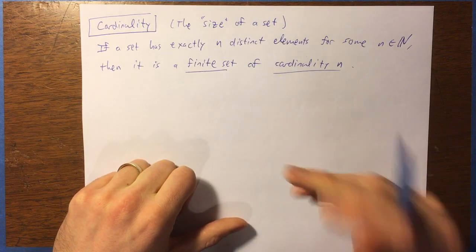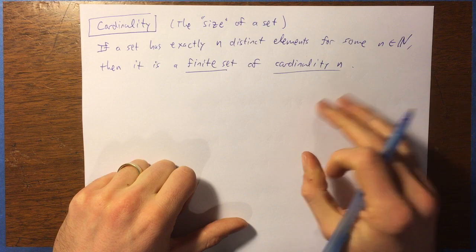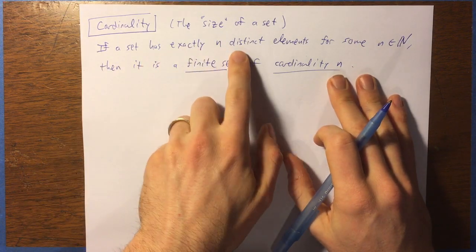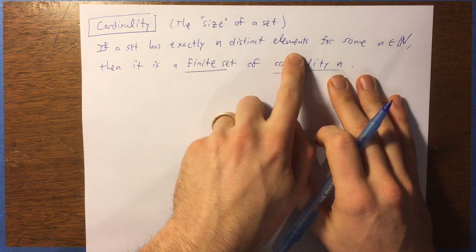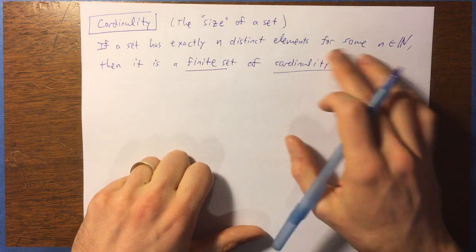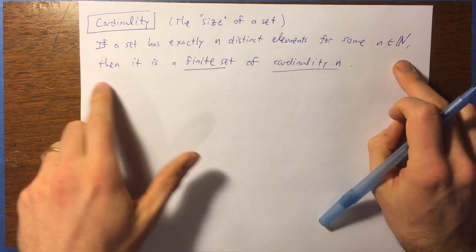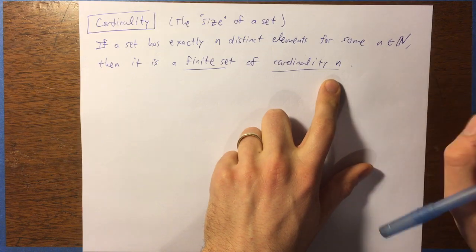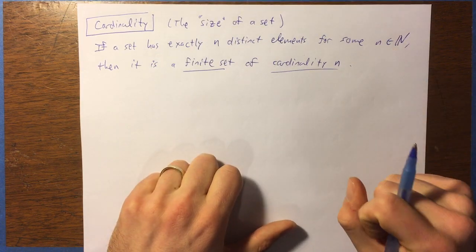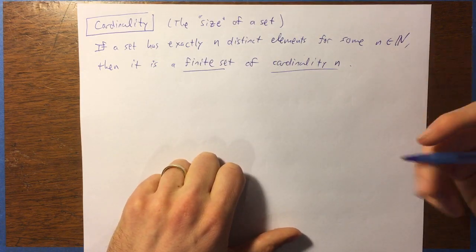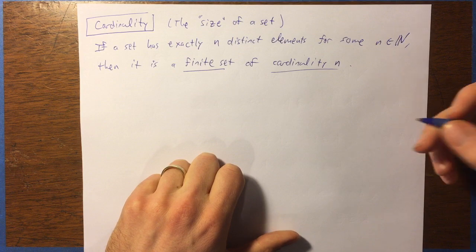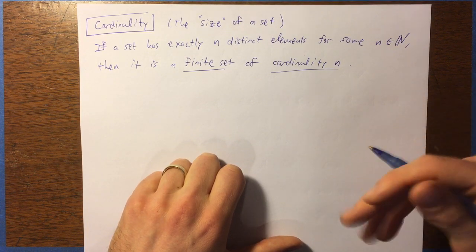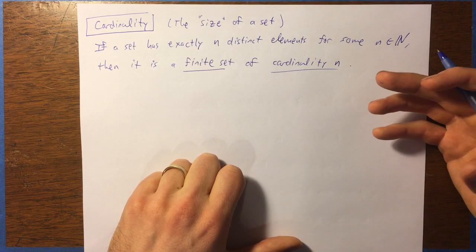For now, let's just define a finite set with cardinality n. If a set has exactly n distinct elements for some natural number n, then it is a finite set with cardinality n. Natural numbers are the possible cardinalities — you can't have a negative cardinality, and you can't have a cardinality which is a fraction. That doesn't make sense; you can't have two and a half elements.